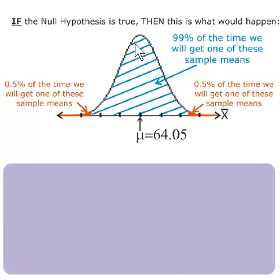Its shape would be normal because the population is normal. Its center would be 64.05 if the null hypothesis is true.